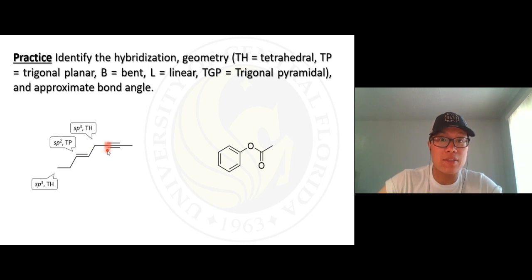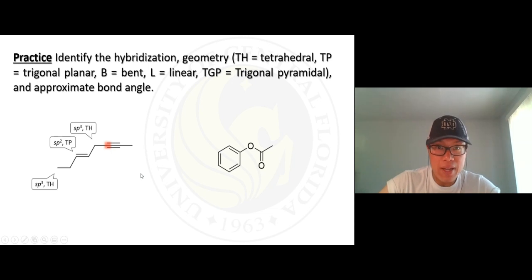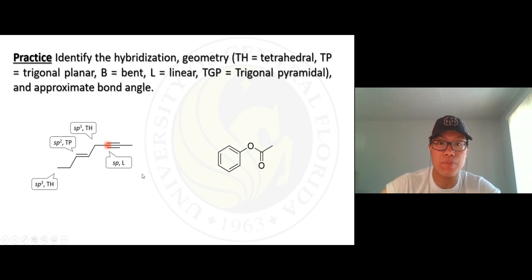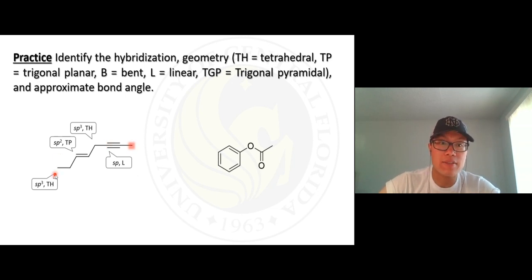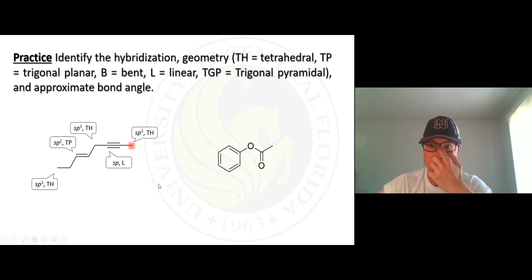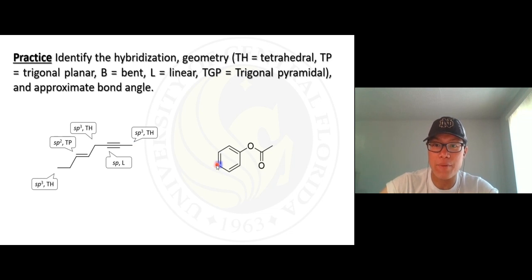Next, this one is linear — you can see it. How many things around it? One carbon and two carbons — the hybridization is sp and the geometry is linear, 180 degrees. And lastly, this one is the same as before: sp3, tetrahedral, 109.5 degrees.